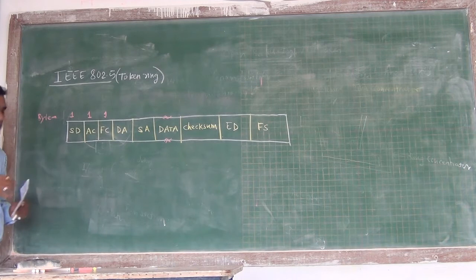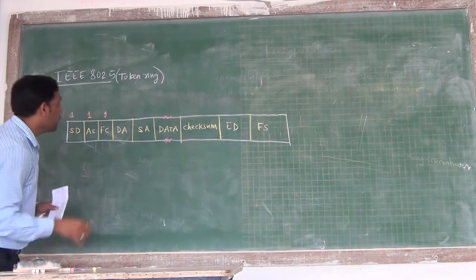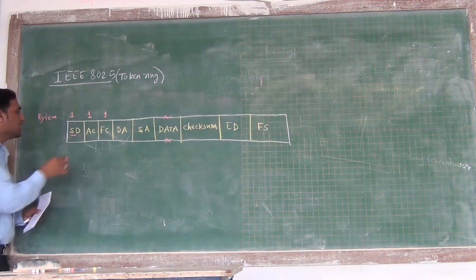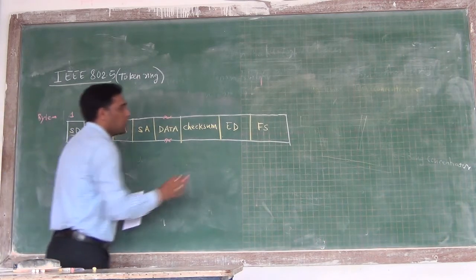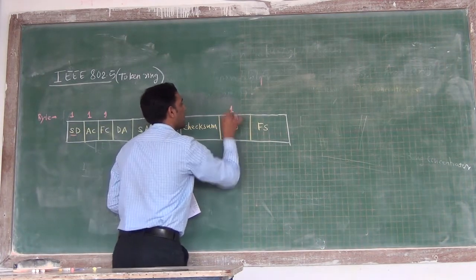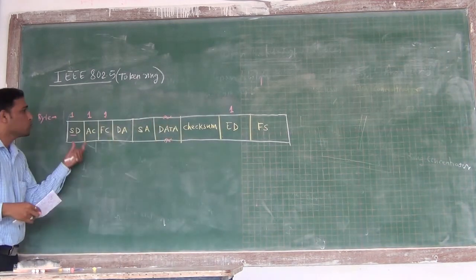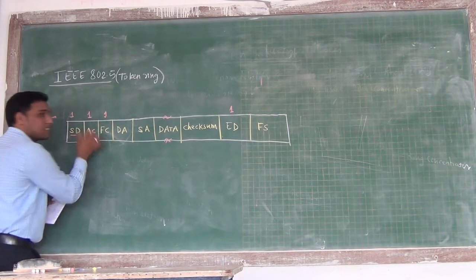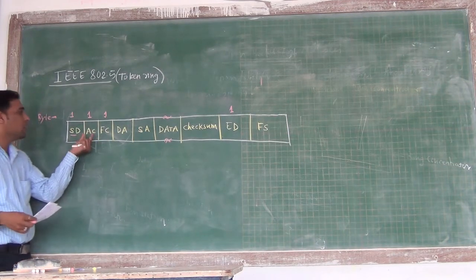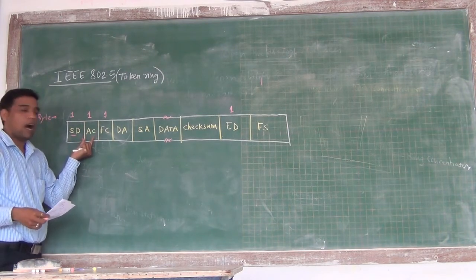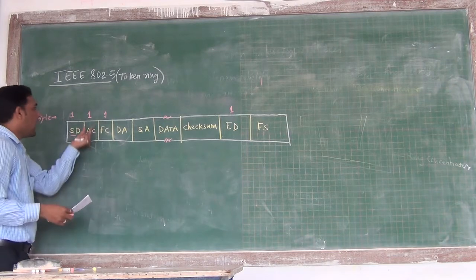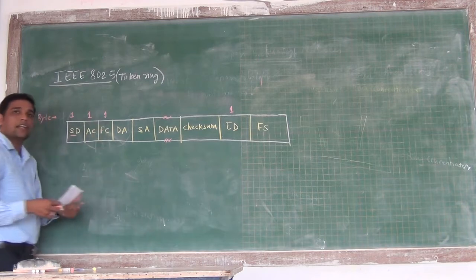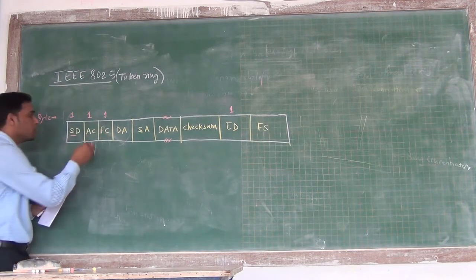Let us try to understand one by one. The very first field is the starting delimiter. The starting delimiter and end delimiter, each of size one byte, are used to define the frame boundaries. Next is the access control — this defines the mechanism of how the medium is to be accessed, and it requires one byte of memory.